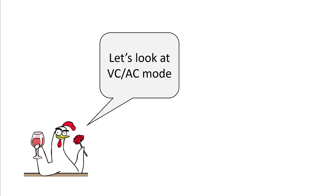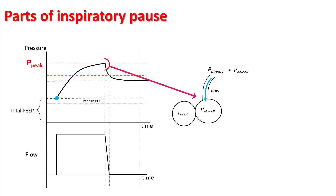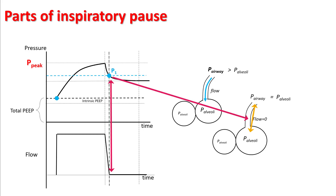Let's look at the VCAC mode to figure this out. To figure out compliance and resistance of the respiratory system, you have to perform an inspiratory pause. Once you perform an inspiratory pause, your pressure in the trachea is still higher than the pressure in the alveoli, so there will be some flow of air from the trachea to the alveoli. However, after some time this flow will cease to exist — that means there will be no flow in the circuit and you will reach a point called P1.